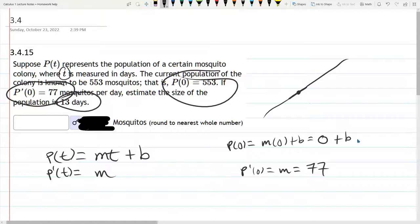so it's just b, so P of 0 is b, but it's also 533, so that's b, 533.